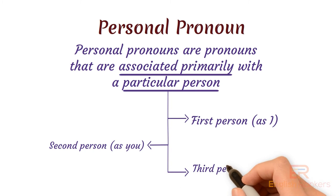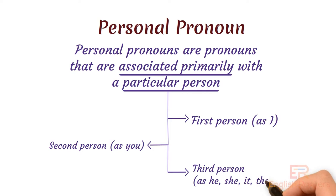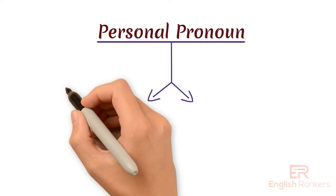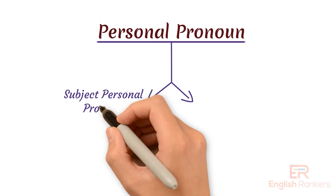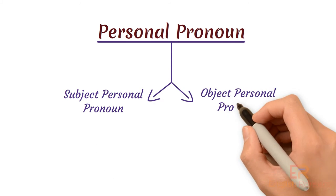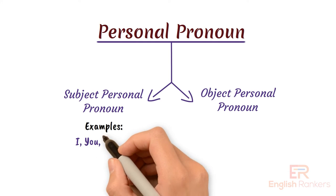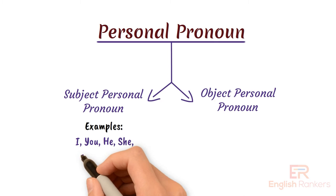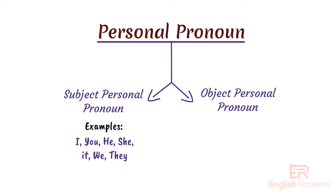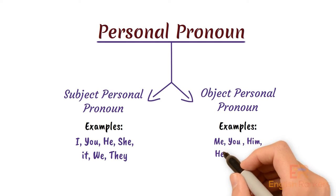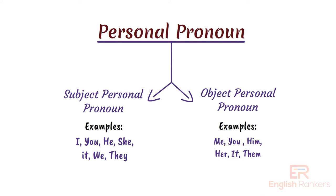Personal pronouns are of two types: subject personal pronouns and object personal pronouns. Subject personal pronouns are: I, you, he, she, it, we, they. Object personal pronouns are: me, you, him, her, it, us, them.